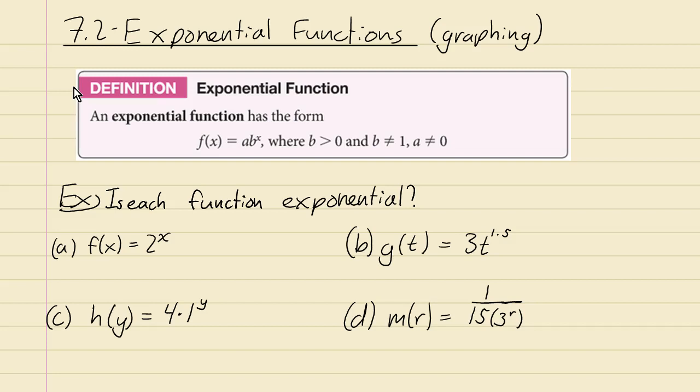First we want to make clear what is an exponential function and what is not. If you can write it in this form, f(x) equals a times b to the power x, and the important thing is that the variable x is the exponent itself. The base of the exponent b is going to be some constant number, some number that has to be positive and not equal to one.